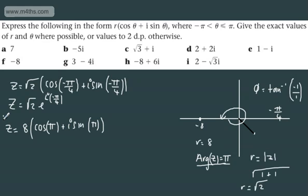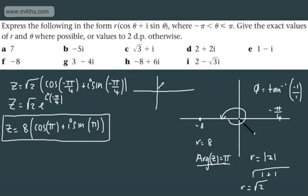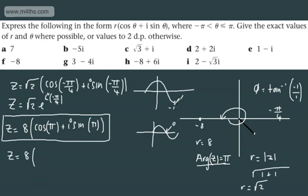If we were asked to put this back in Cartesian form, remember that's polar form and Cartesian form is the real number negative 8. Going back to our trig work: cosine of pi is equal to minus 1, and sine of pi is equal to 0. So Z is equal to 8 times cosine of pi, which is negative 1, plus i times sine of pi, which is 0. All we get is Z equal to minus 8. In Cartesian form, you can see we can convert between the two.